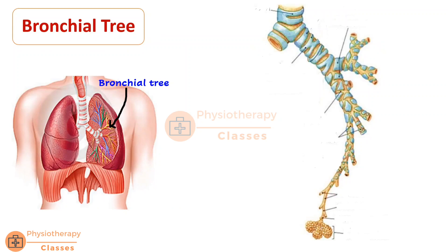Before we discuss what exactly a bronchopulmonary segment is, let's briefly look at the bronchial tree. The bronchial tree is responsible for aeration of the lungs. Here we can see the right lung and the left lung, with the trachea dividing into two bronchi — the right and left principal or primary bronchi. Each primary bronchus divides into smaller bronchi and then into bronchioles, which lead to the alveoli where gas exchange takes place.